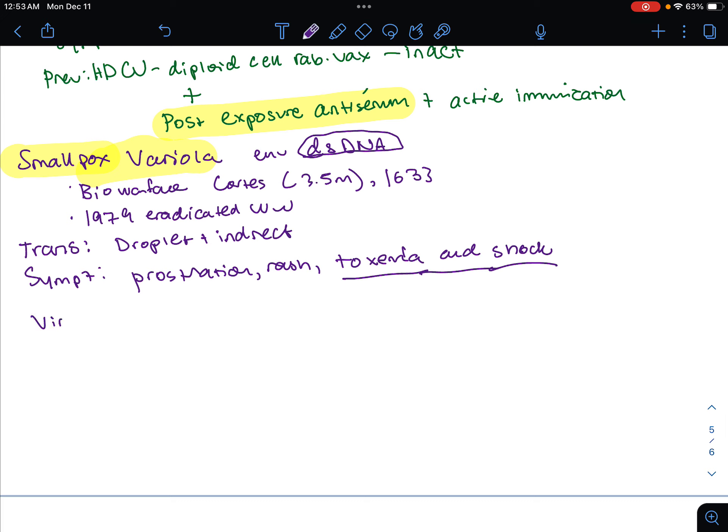Virulence factors include the ability to dampen and avoid the immune response. Prevention: going to use the live vaccine known as the vaccinia. That's from cowpox. Treatment: this is going to be immunoglobulin or passive immunity.